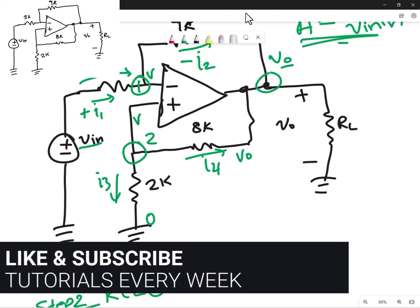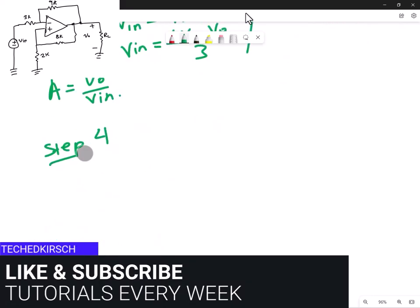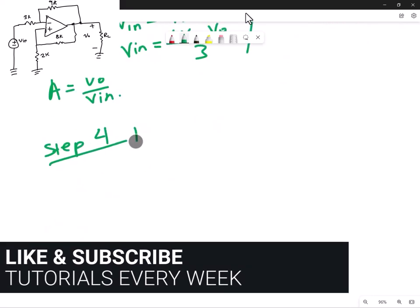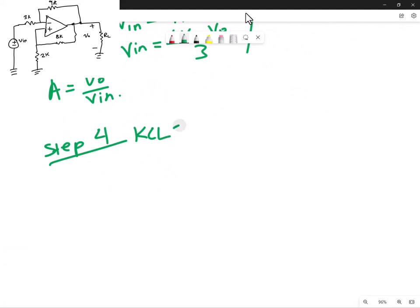Both of these currents, I3 and I4, are leaving the node. So both of them will have a negative sign in front of them. So step 4 is to do KCL on the second node. That would be minus I3 minus I4 is equal to zero, they both sum to zero.